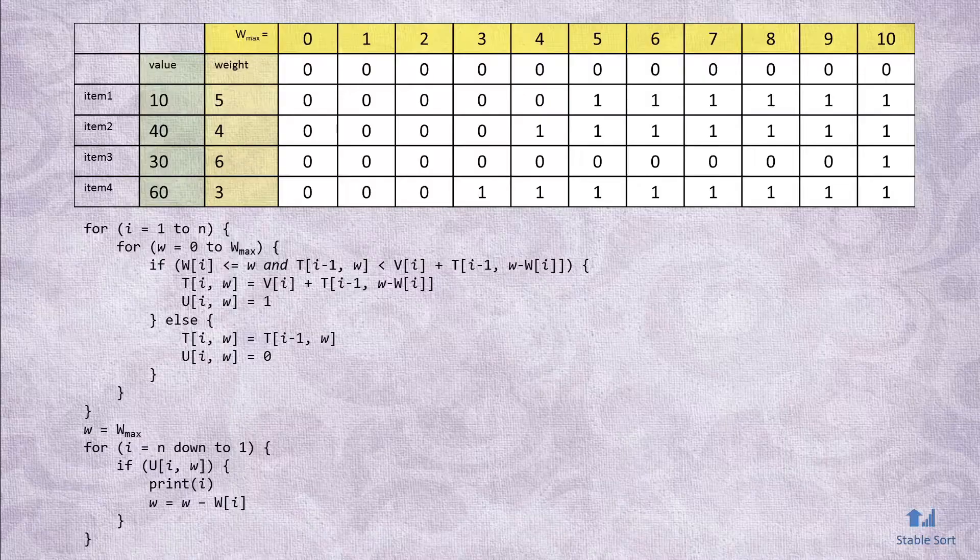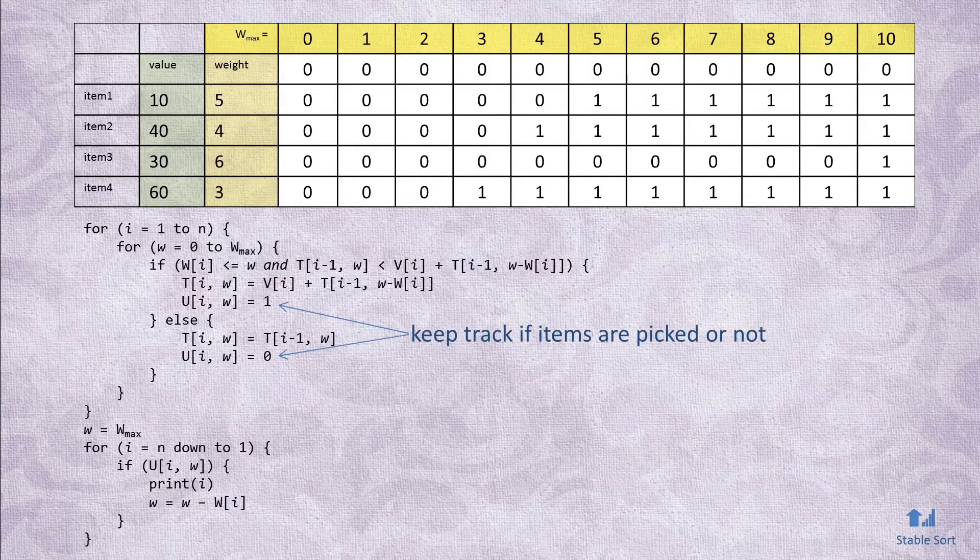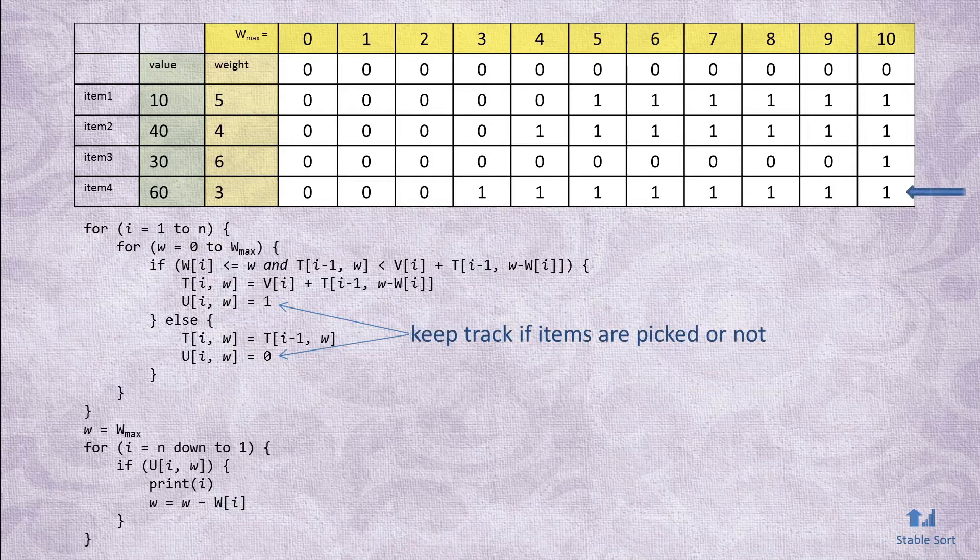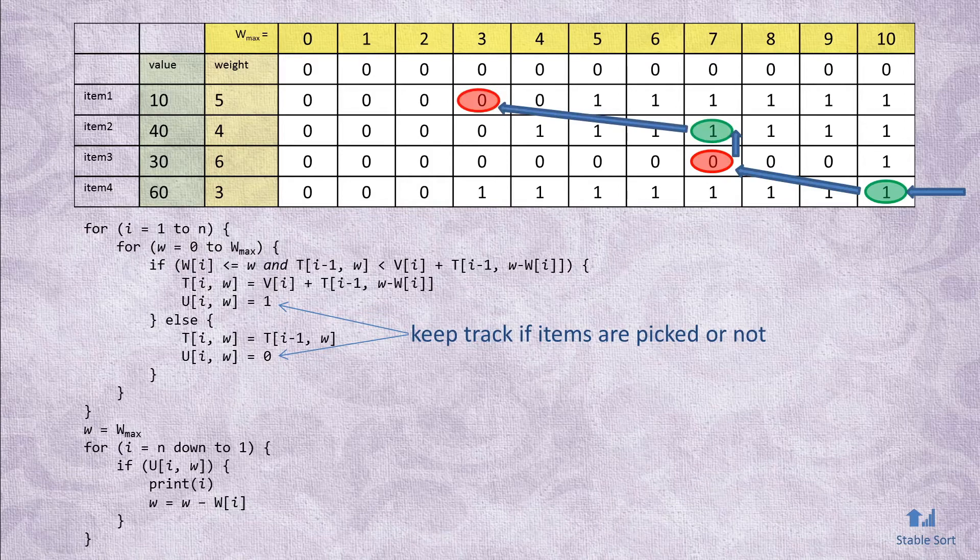For that, we'll need an additional two-dimensional Boolean array that simply keeps track of if an item is used or not. We make a minor change to our pseudocode, populating this additional table. To read it out, we start at the bottom rightmost cell. If the value is 1, we output 1. Then, we subtract the capacity taken up by the item in the current row and check the previous row.